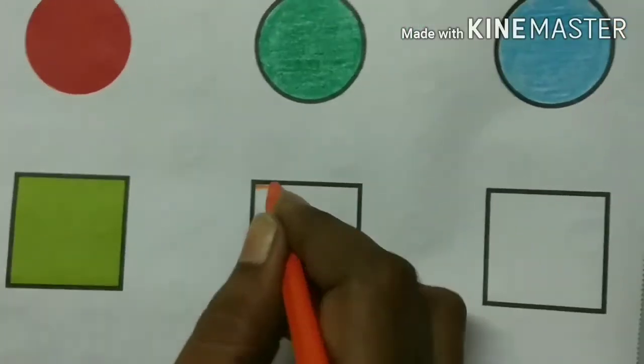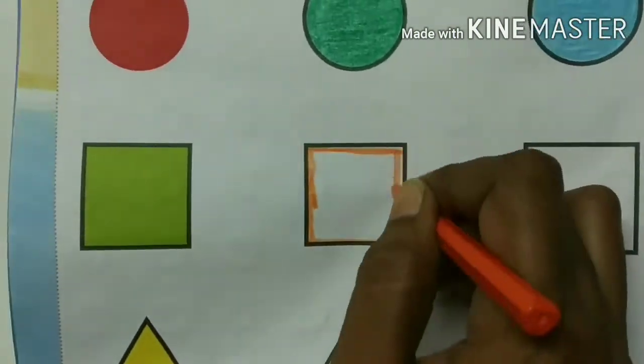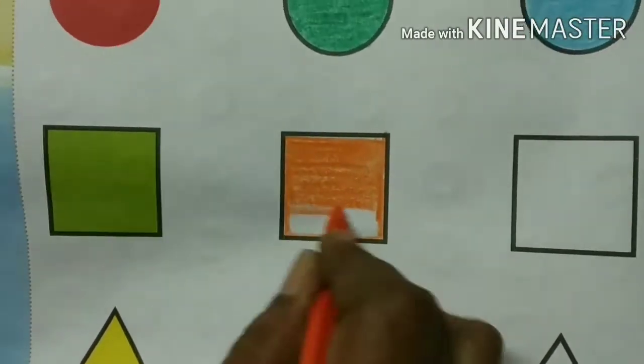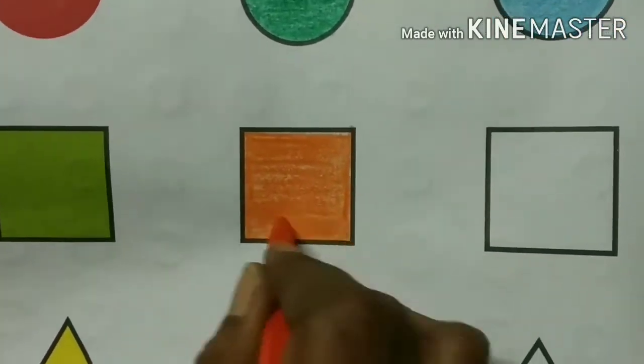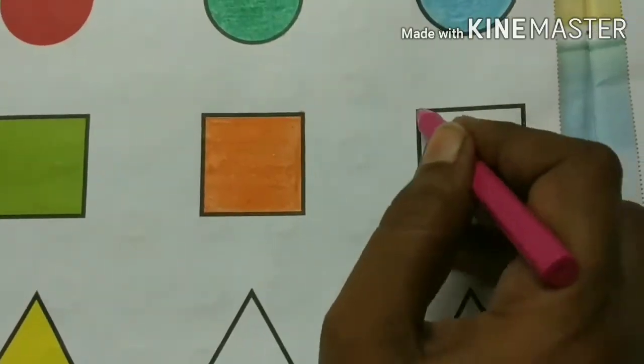It means pink, black color. Here we go. The dark color is green. It's brown color.